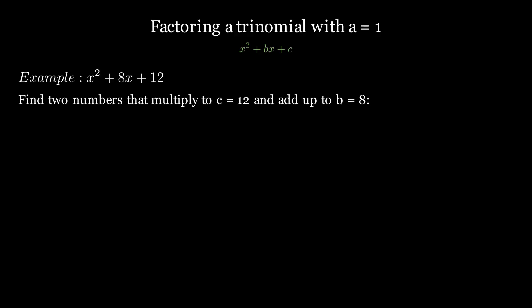We need to find two numbers that multiply to c equals 12 and at the same time add up to b equals 8. Let's check the possible factor pairs of 12: 1 times 12, 2 times 6, 3 times 4,